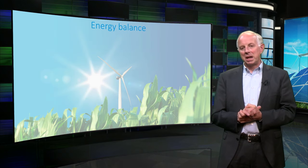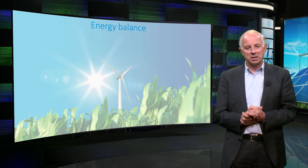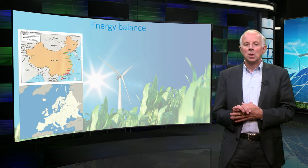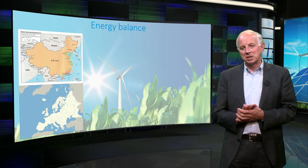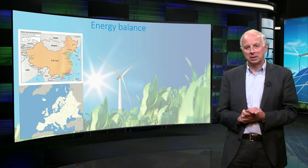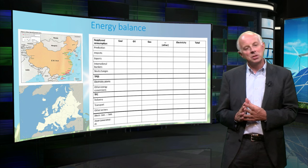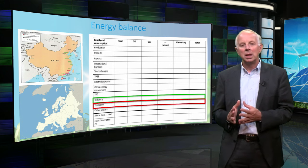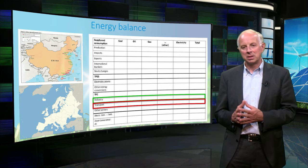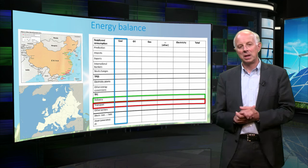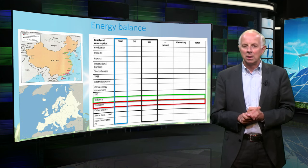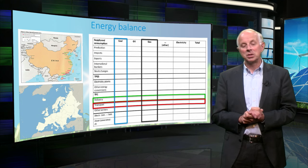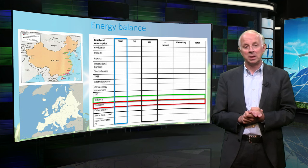This concept of energy balances can also be applied on a larger aggregation level, such as countries or regions. On the country level, an energy balance is typically presented as a matrix. In this matrix, each row represents a sector, such as industry and transport, while columns represent an energy carrier, such as coal or natural gas. These energy balances are compiled for all countries annually by the International Energy Agency in cooperation with the United Nations.